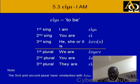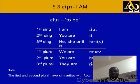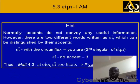The first and second plural have similarities with luo, as you can see. The verb to be is used quite a lot, so it's one that you may want to learn because you will encounter it quite a lot. We use the verb eimi in many various sentences in the Greek language.